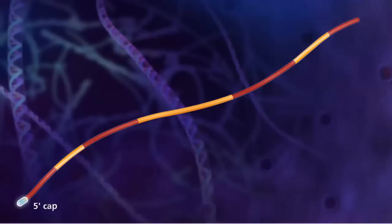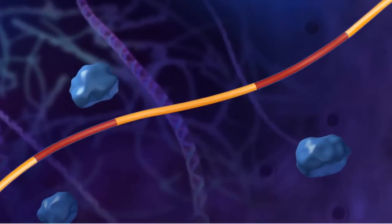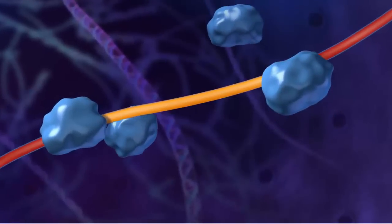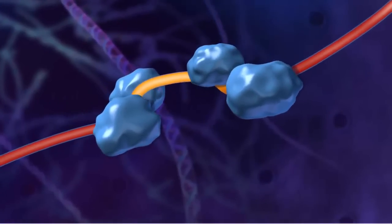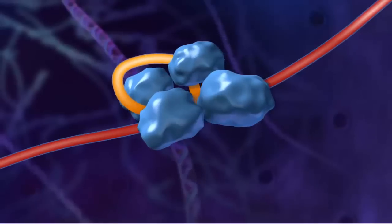Modifications such as a five prime cap and a three prime poly-A tail are added. This process is called intron splicing and is performed by a complex made up of proteins and RNA called a spliceosome. This complex removes the intron segments and joins the adjacent exons.